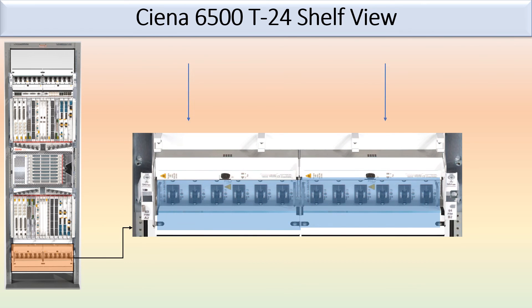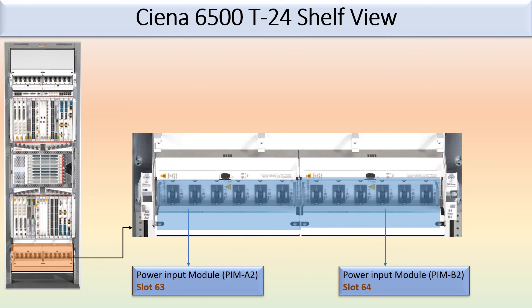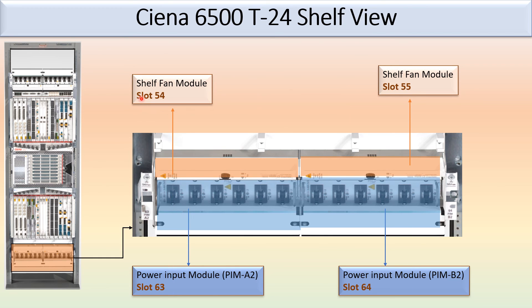On the top again there is a power input module at slot 63 and slot 64 — this is PIM-A2 and PIM-B2. On the upper side, if you remember, that was PIM-A1 and PIM-B1. This is the shelf-end module at slot 54 and slot 55. Thank you.